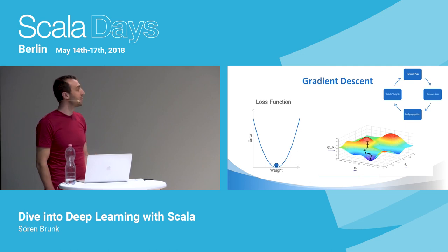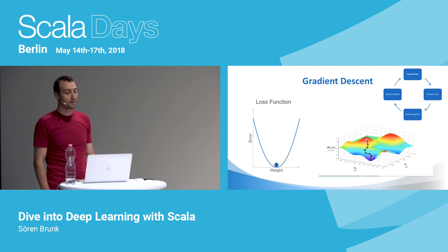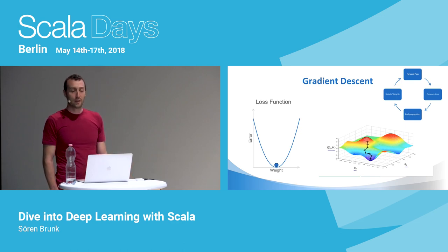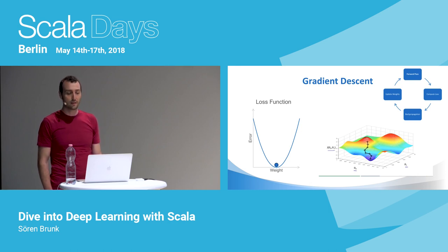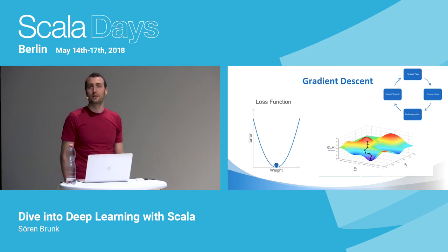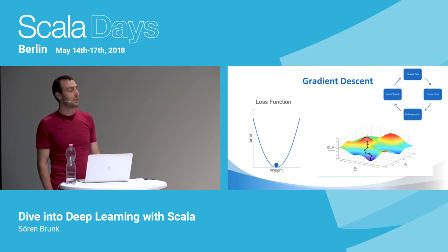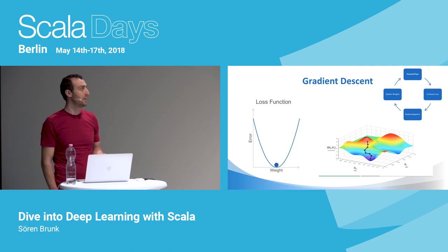The loss function looks simple in these examples because we only have one or two weights. In reality, we have a very high-dimensional space of thousands or even millions of weights, with more complicated loss functions. So we might have to deal with all kinds of issues to get training right. But even for deep complex networks, the training process is just running those four steps repeatedly.